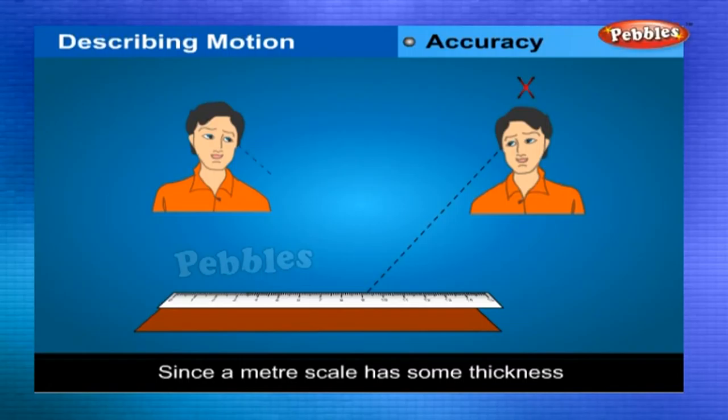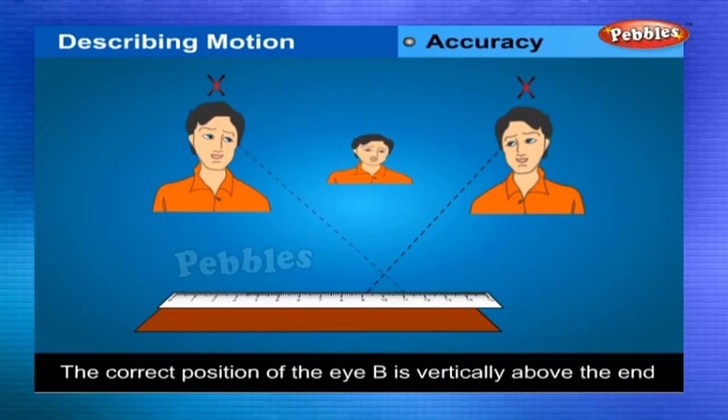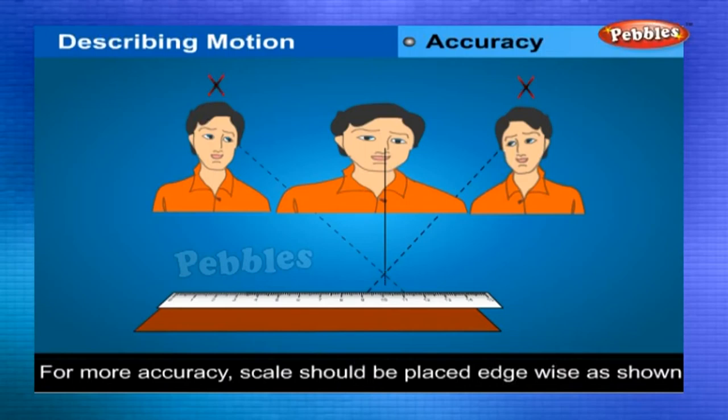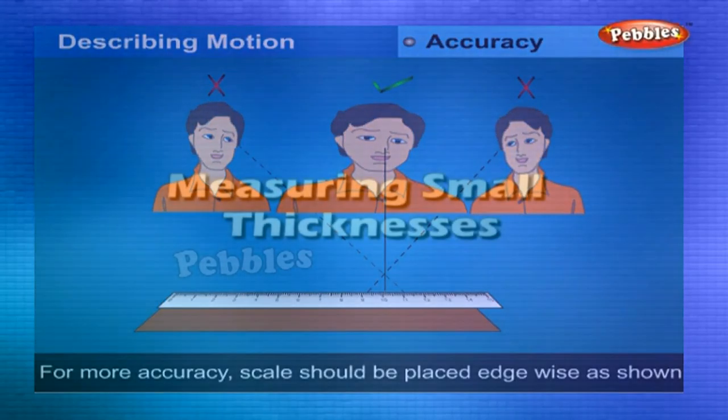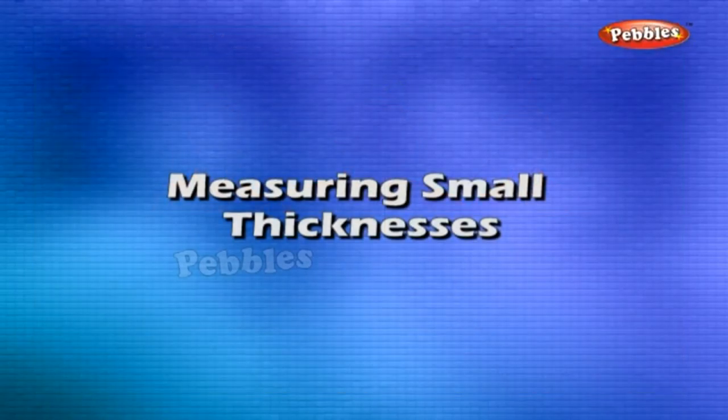Since a meter scale has some thickness, we may make an error if the eye is not correctly positioned. The correct position of the eye is vertically above the end where the reading is to be taken. For a more accurate measurement, the scale should be placed edgewise as shown in figure.